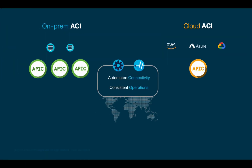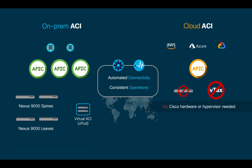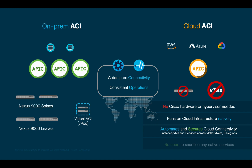After the APIC is up and running, we would normally continue to discover spine and leaf nodes if we were running on-premises. However, in the cloud this is a little bit different, since we don't know what hardware or switches each cloud provider is running. We want to maximize the usage of cloud-native services without dictating which switches or hypervisors you should use in the cloud. Therefore, Cloud ACI runs on the cloud provider's infrastructure natively, normalizing, automating, and securing each cloud provider's connectivity model using their own services across multiple regions. By following this approach, there is no need for you to sacrifice any cloud services, since you are directly using each cloud provider's hypervisor and infrastructure.